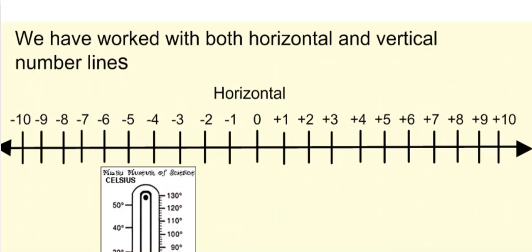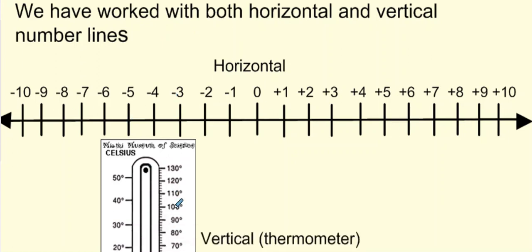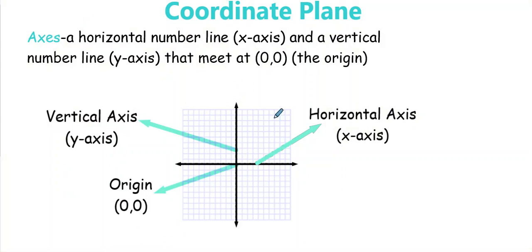So let me talk first about number lines. We've worked with number lines that are horizontal, that look like this, and some that are vertical that look like this. On a number line we've mostly worked with positive numbers, but you have to know there's also negatives. A coordinate plane is just putting them together — a vertical and a horizontal number line together.